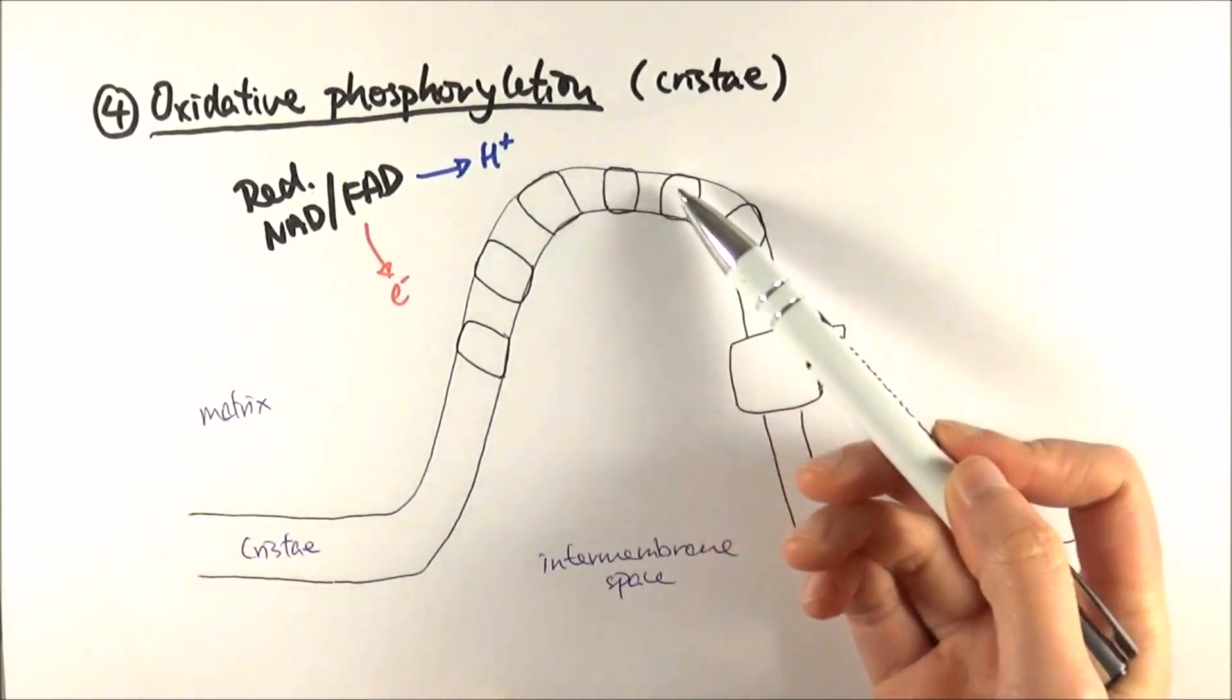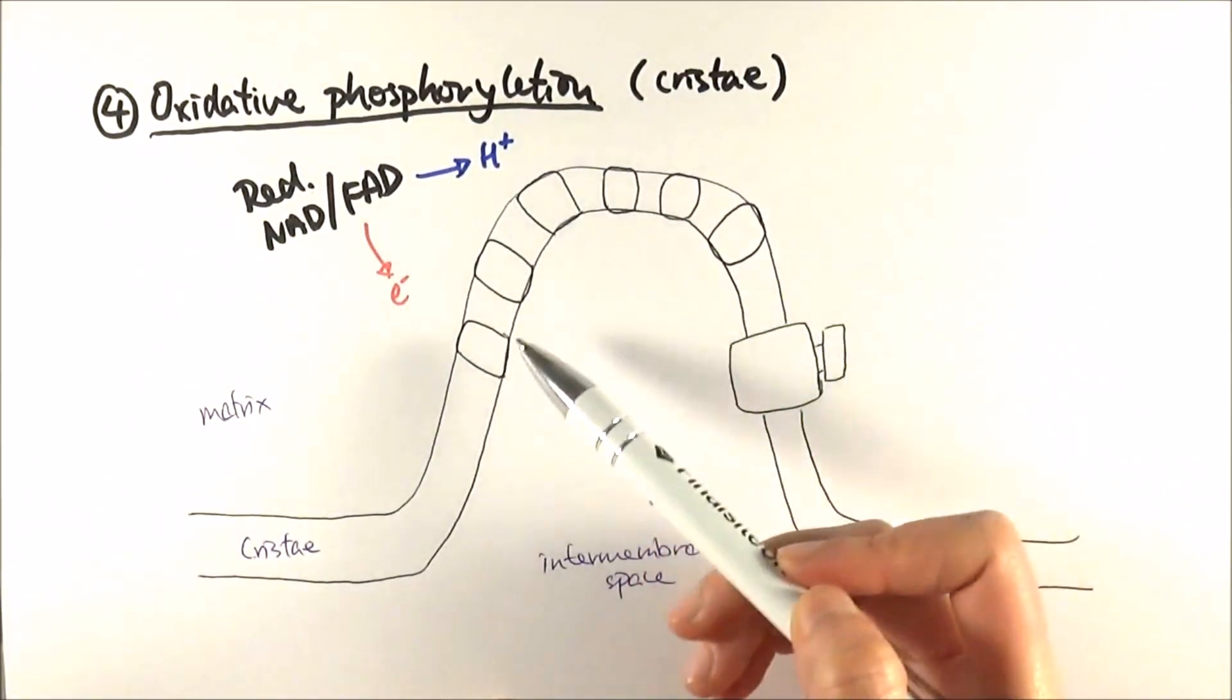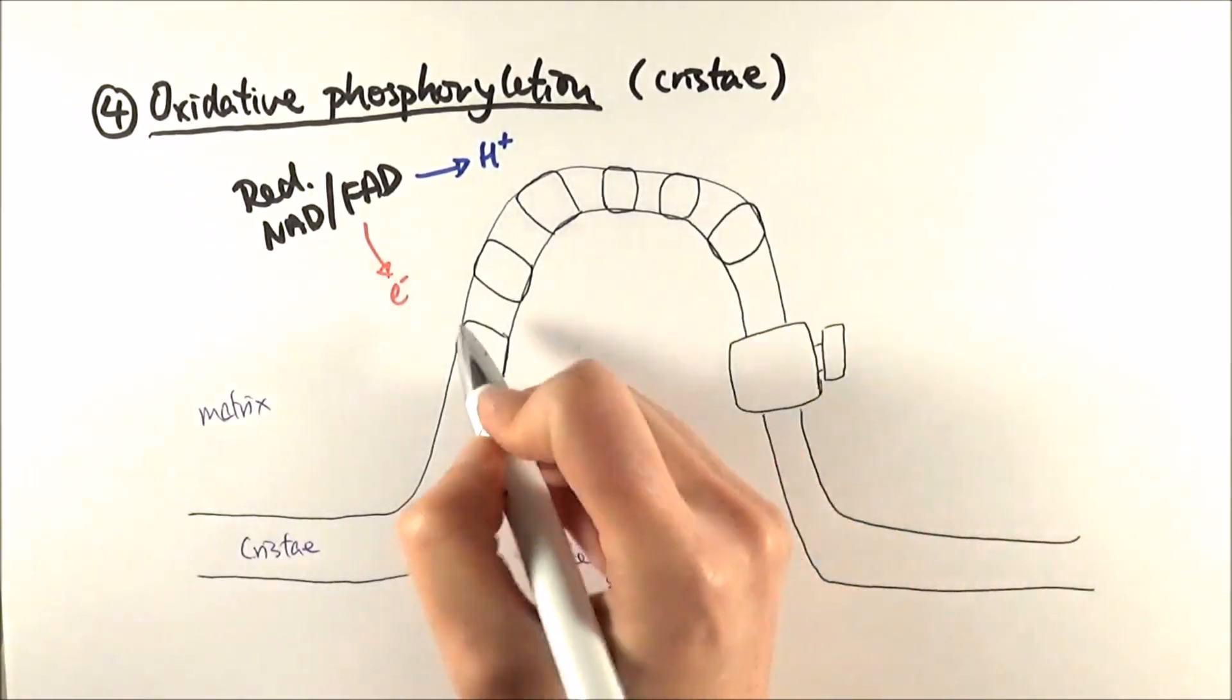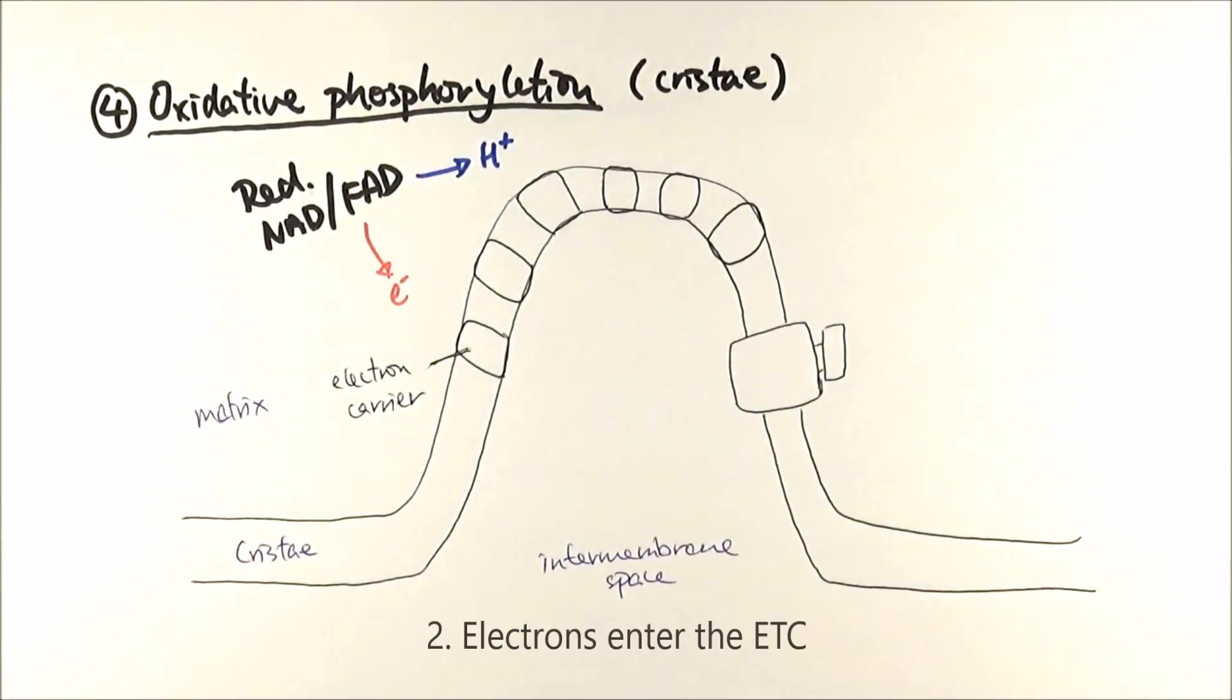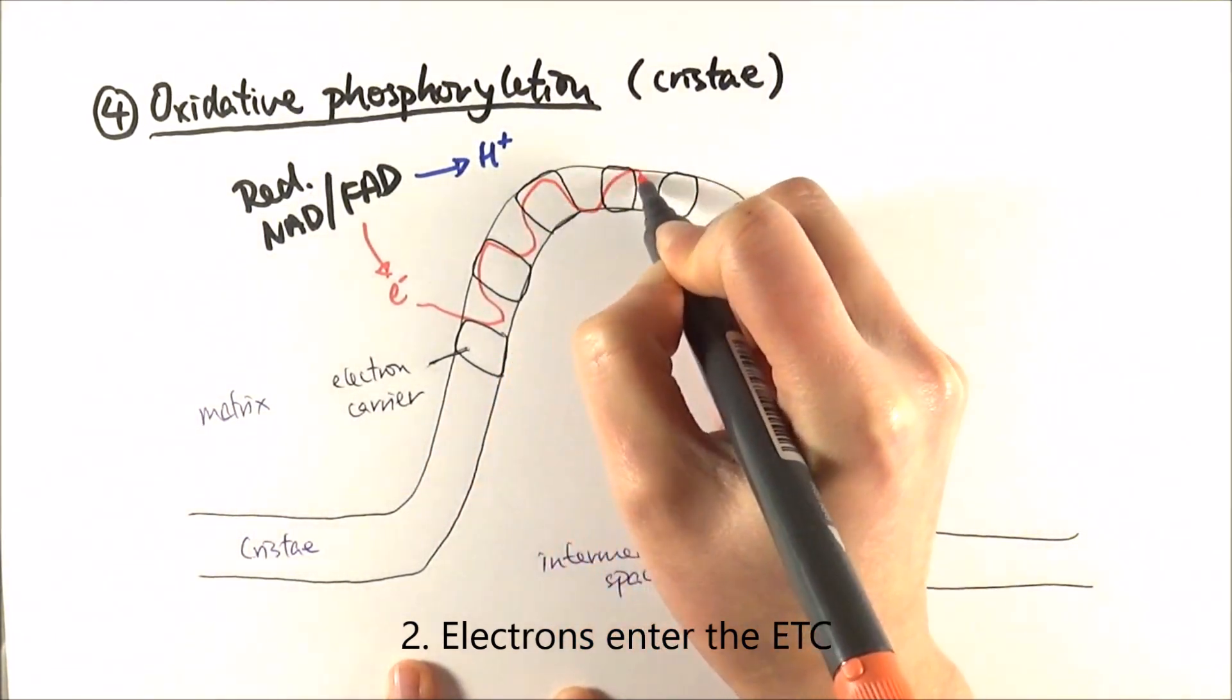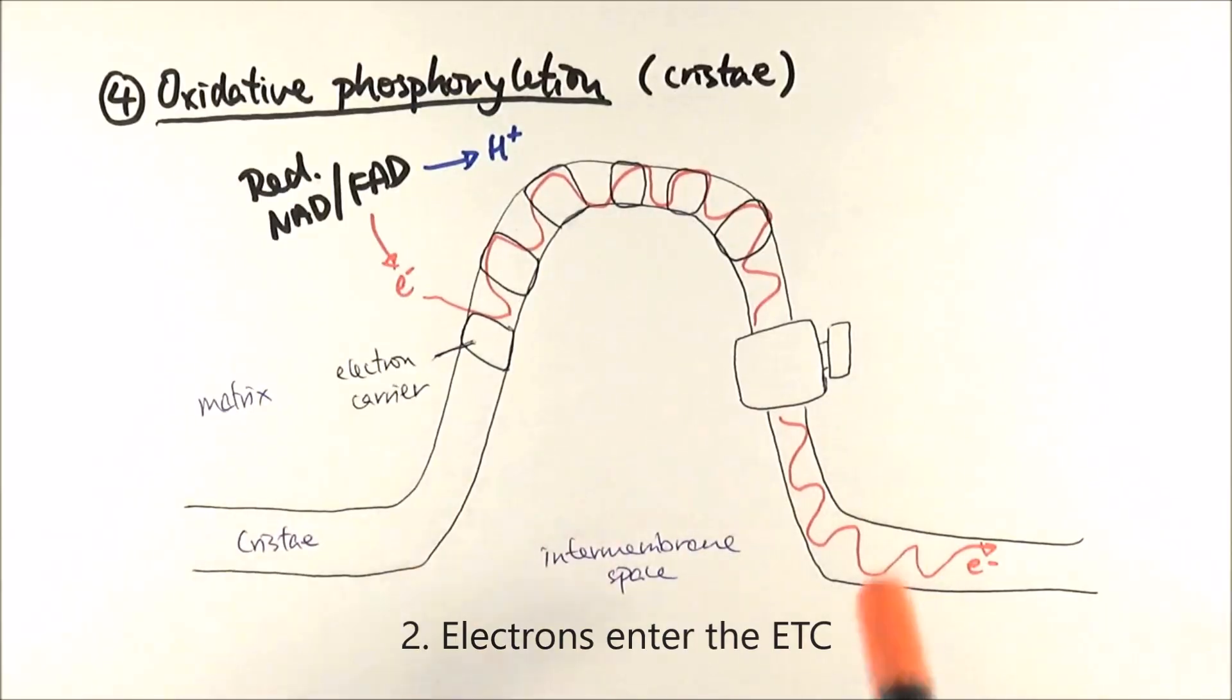As you can see, the different proteins here, these are all electron carriers, and they form what we call the electron transport chain. And as the name implies, the electron is being transported across them. So they travel along all of these proteins until here, and we'll come back to it later on.